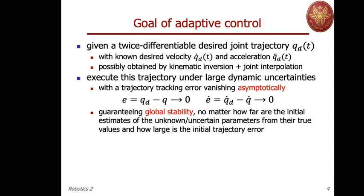The goal in general is that we could start even without any a priori or offline identification. We assume a sufficiently smooth trajectory, and that the desired acceleration exists — it may be discontinuous or not, but it exists as a signal. This trajectory may come from kinematic inversion and joint interpolation of a Cartesian space trajectory, but since we build the error in joint space, this adaptive controller is classified among the joint space control laws — in fact, the last one we will see in this course.